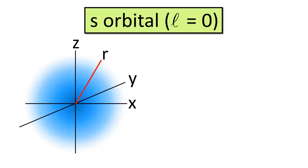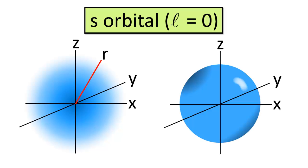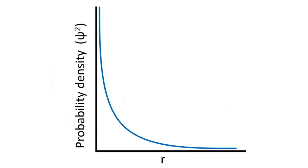This means that there's a higher likelihood of finding the electron there. As you can see, the S orbital is spherical. It can also be portrayed as a sphere that has no heavily shaded or lightly shaded regions, under the assumption that the volume encompassed by the sphere has a 90% probability of containing the electron.